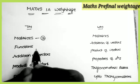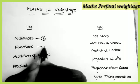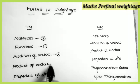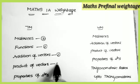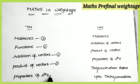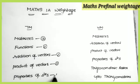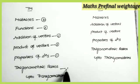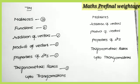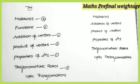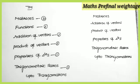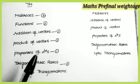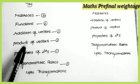From the topic Matrices: 2 seven-mark questions. From Functions: 1 question. From Additional Factors: 1 question. From Product of Factors: 1 question. From Properties of Triangles: 1 question. From Trigonometric Ratios up to Transformations: 1 question. Total 7 questions. So Matrices has 2 questions — that is a very important thing.